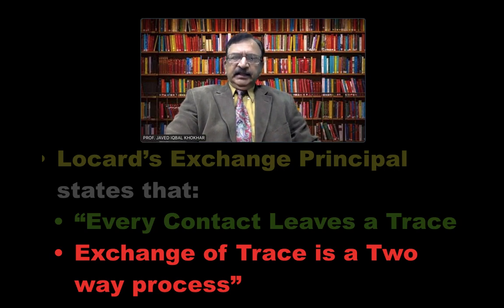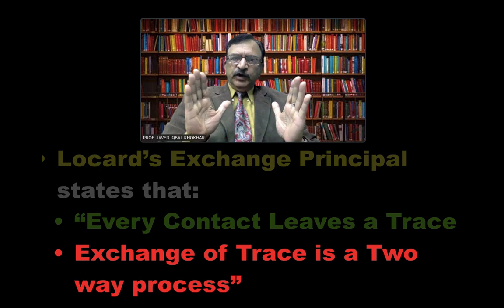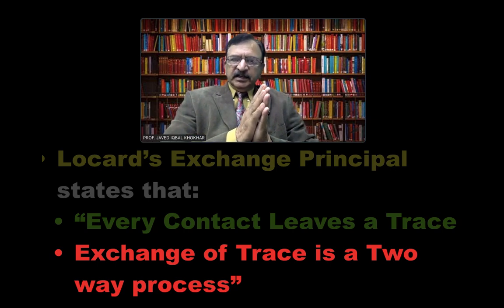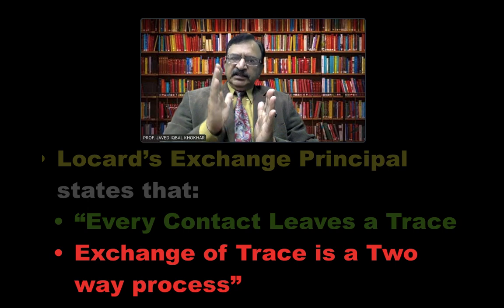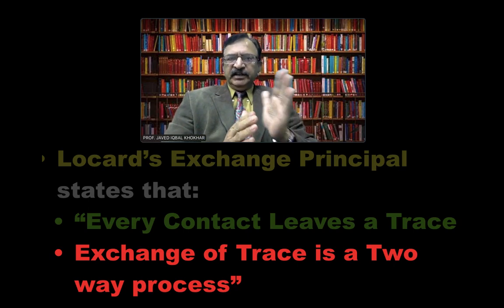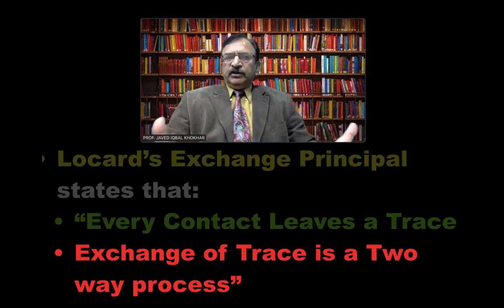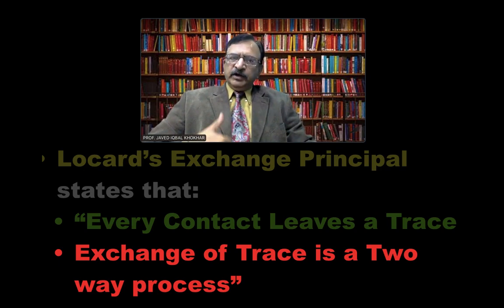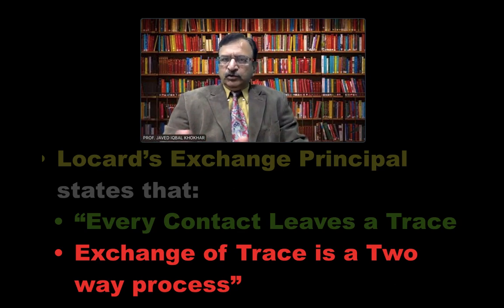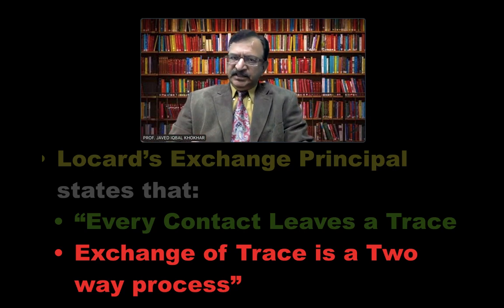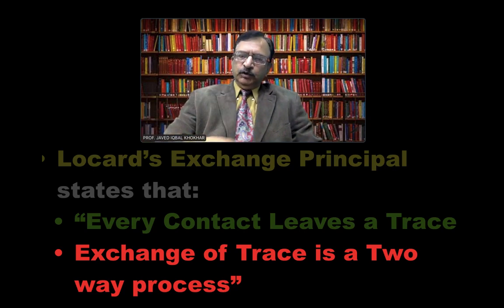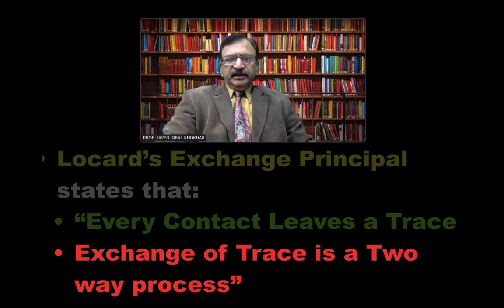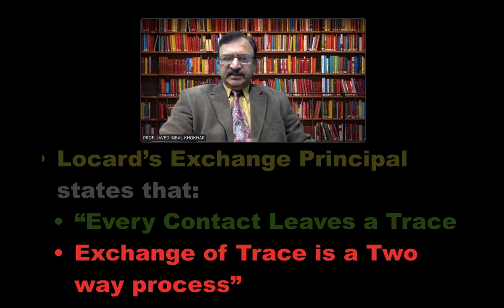The Locard Exchange Principle states that every contact leaves a trace, and the exchange of this trace is a two-way process. For example, whenever two individuals come in contact with each other — like these two hands — they leave a trace: the right hand leaves a trace on the left, and the left hand leaves a trace on the right. Similarly, when two individuals come in contact, there is an exchange of material from one to the other. This exchange can also be two-way between the scene of crime and both the assailant and the victim.